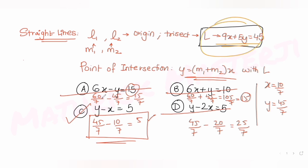The correct answer is option C: y - x = 5. I hope you understood how to solve this type of question. See you tomorrow with another question continuing our series on JEE Mains. Please like, subscribe, and share these videos with friends preparing for JEE. Thank you.